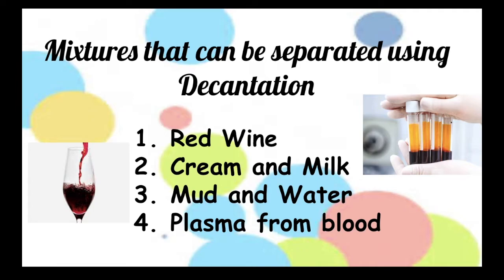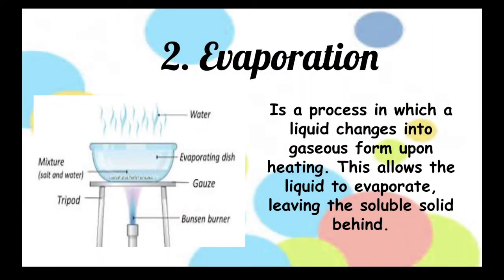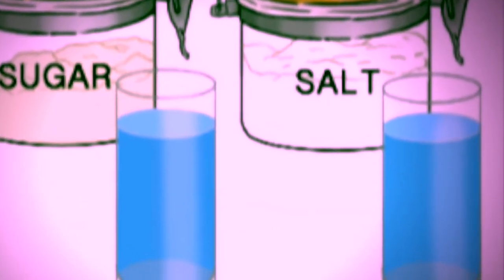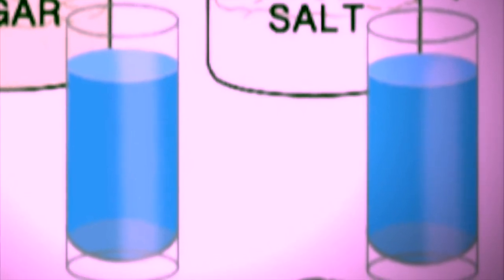The second separation technique is called evaporation. It is a process in which a liquid changes into gaseous form upon heating. This allows the liquid to evaporate, leaving the soluble solid behind. Examples of mixtures that can be separated using evaporation are salt water and sugar combined with a water.